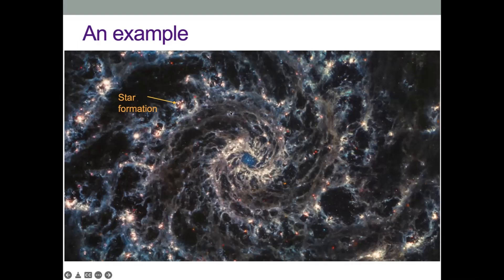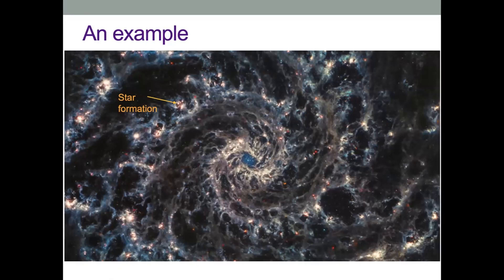So up here we have — can you see my pointer moving? Fantastic. There are these little red dots, which show where we have very reddened gas, sites of star formation. And right away we can see the connection with the galactic structure. Where are we finding these sites of star formation? We're finding them in the spiral arms — they just line up along the spiral arm. And so immediately we have one of the themes of this lecture: the gas is assembled into these structures by the large-scale galactic dynamics.